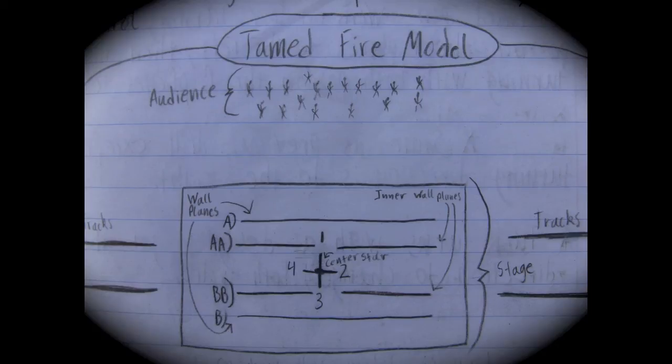I want to bring up the model again because I will reference it throughout the lesson. The center star represents you and the numbers around it represent your arms or hand placement. The two main planes are the A plane and B plane — A for audience, B for behind. The inner wall planes are used during buzz saws and other movements. The lines, also known as tracks, help with playing control and overall form. I use this model as a visualization tool to help understand movements.